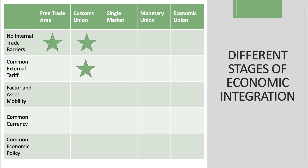A customs union develops the integration and deepens the connections. It adds free trade and also adds to the system a common external tariff placed around the customs union. A single market is a deeper stage of integration — yes, free trade and common external tariff, but also factor and asset mobility.